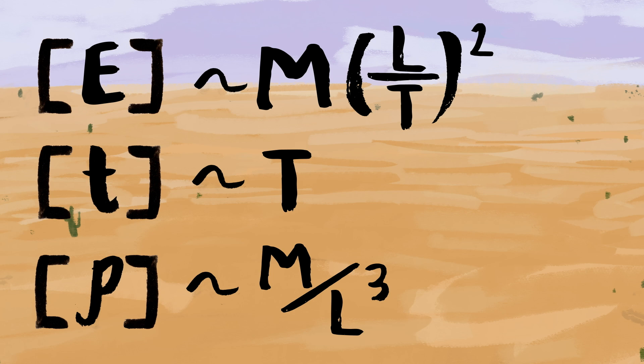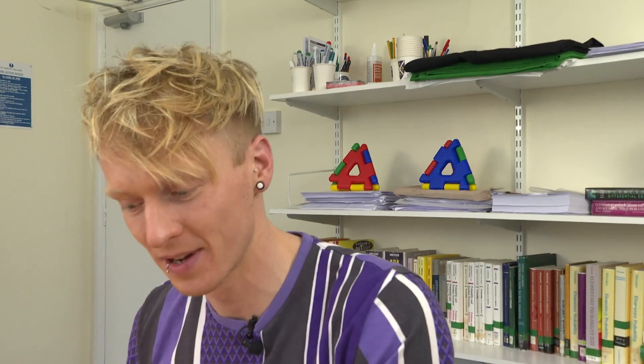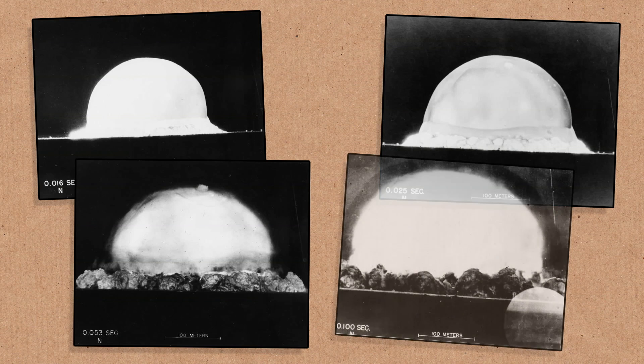The scaling analysis argument is: I've determined through knowledge of physics and fluid dynamics, as Taylor did, that energy, time, and density are the most important parameters controlling the blast radius. If I can arrange these in such a way that I get rid of mass and time from the units and am left with just a length, that must be the radius — what other possible length could it be? You then validate this with experiments; Taylor had one or two photographs from the Trinity test and confirmed it was correct.